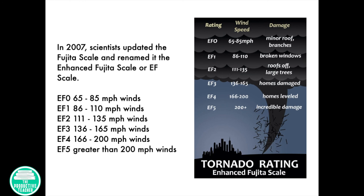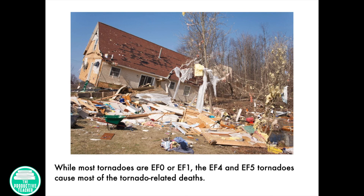EF 0: 65 to 85 mph winds. EF 1: 86 to 110 mph winds. EF 2: 111 to 135 mph winds. EF 3: 136 to 165 mph winds. EF 4: 166 to 200 mph winds. EF 5: greater than 200 mph winds. While most tornadoes are EF 0 or EF 1, the EF 4 and EF 5 tornadoes cause the most tornado-related deaths.